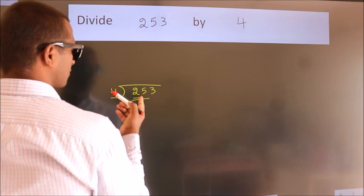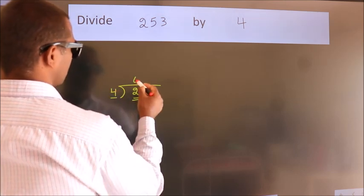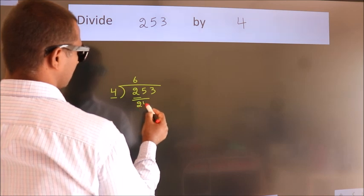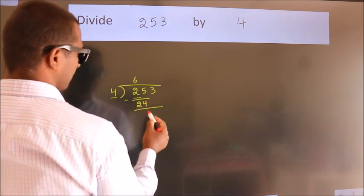A number close to 25 in 4 table is 4, 6, 24. Now we should subtract. We get 1.